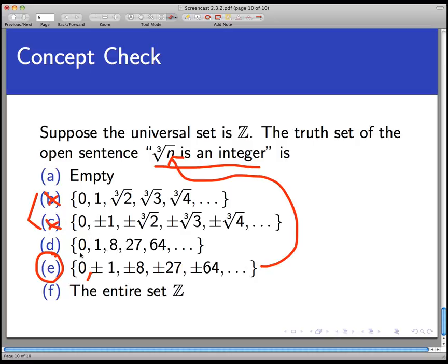I know that 0, the cube root of 0 is 0. The cube root of 1 is 1. The cube root of 8 is 2. The cube root of 27 is 3. The cube root of 64 is 4. So all of these guys work. That makes empty out of the question.